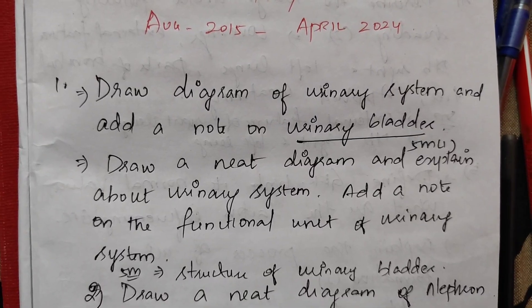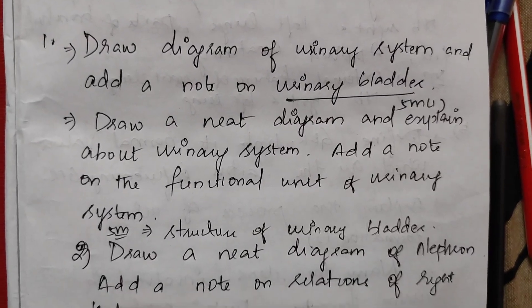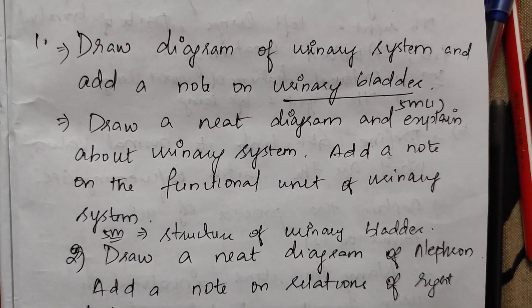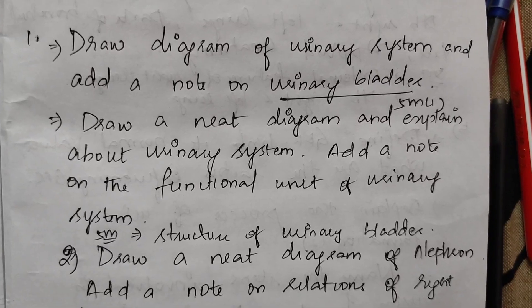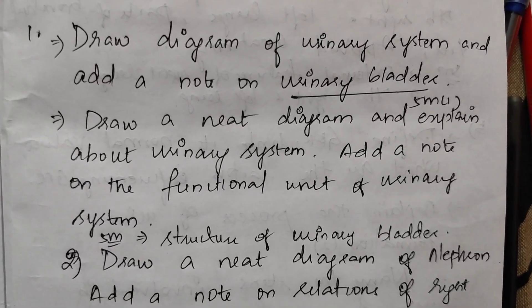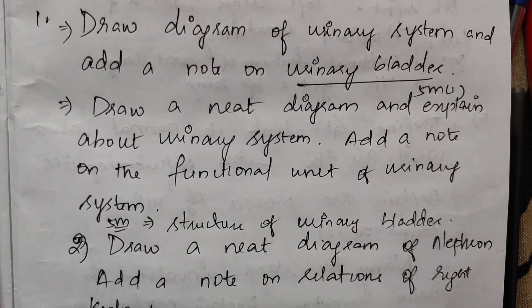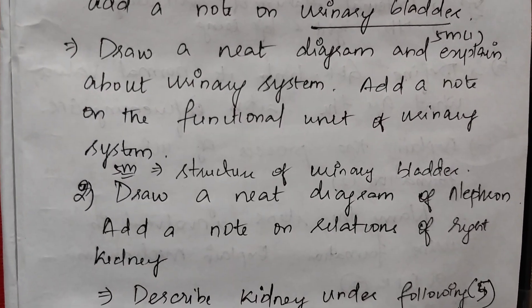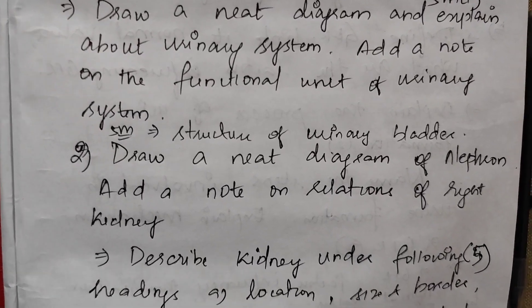Next, draw a neat diagram and explain about the urinary system. Add a note on the functional unit of the urinary system. For 5 marks: structure of urinary bladder.